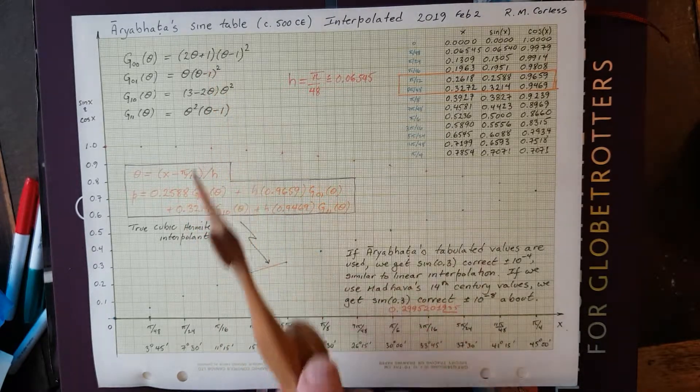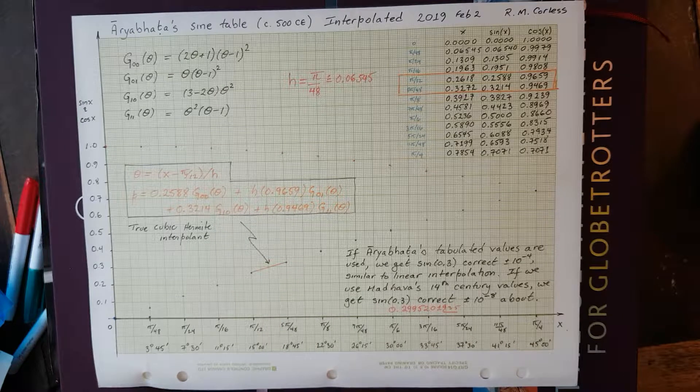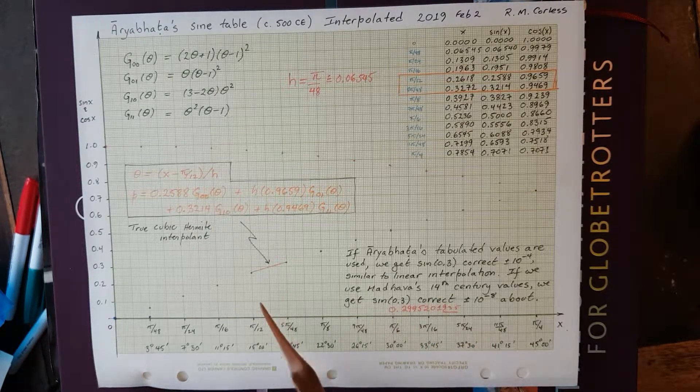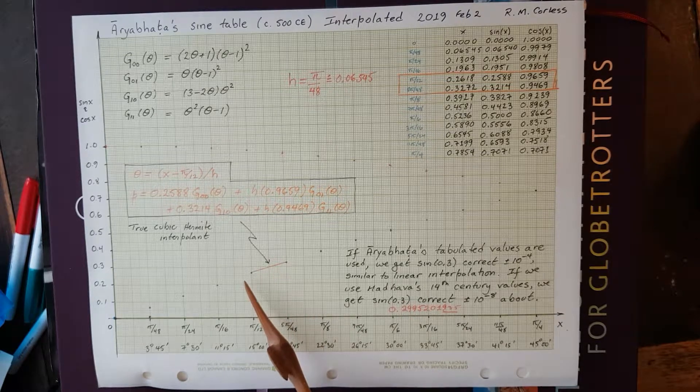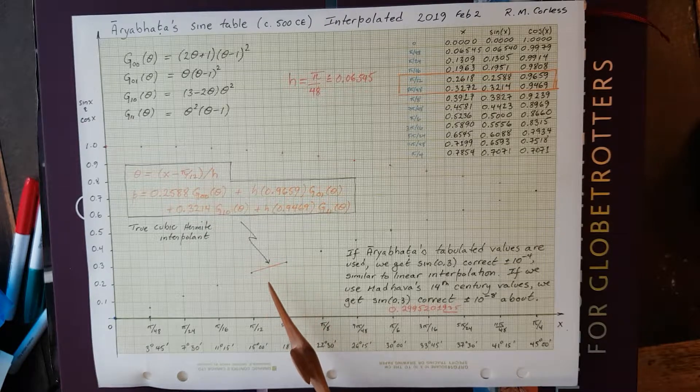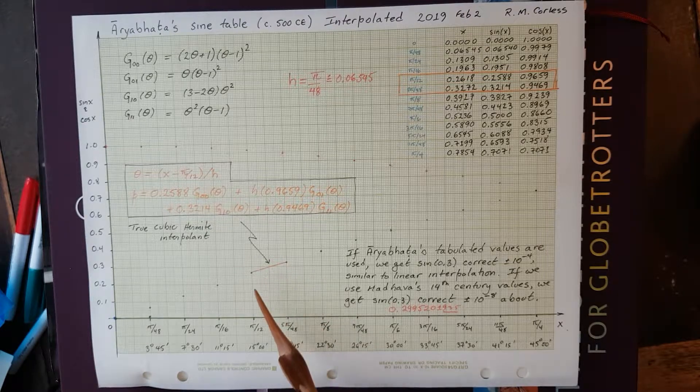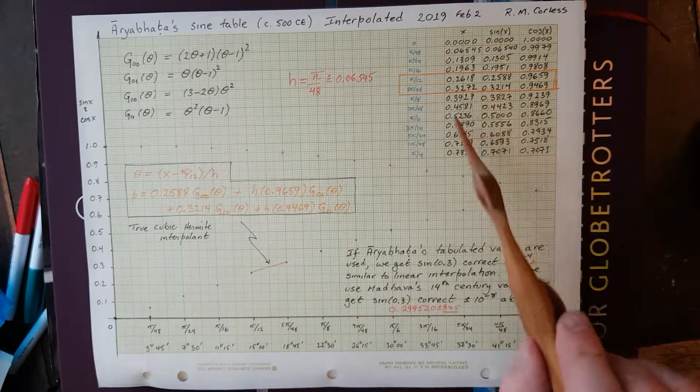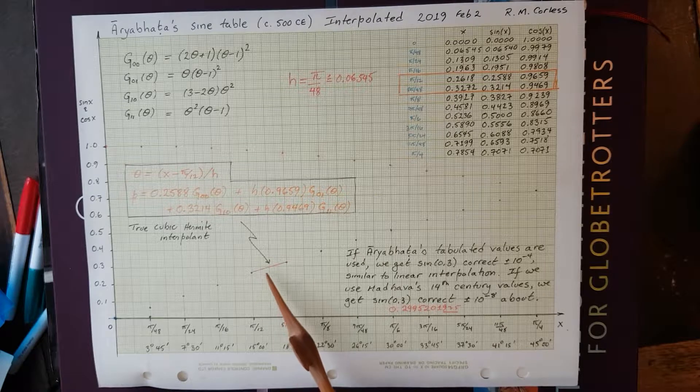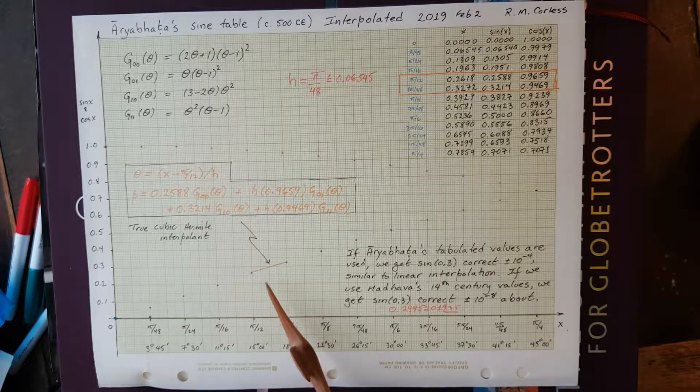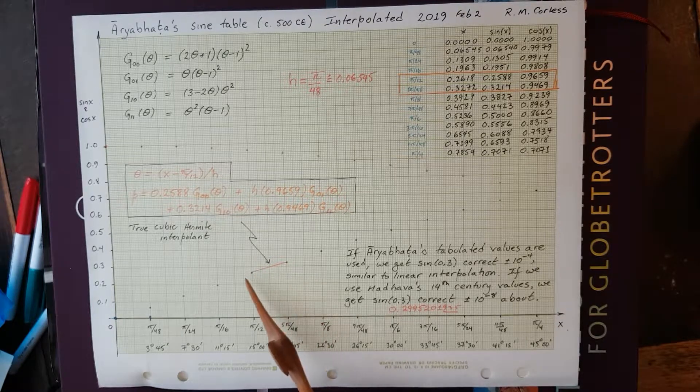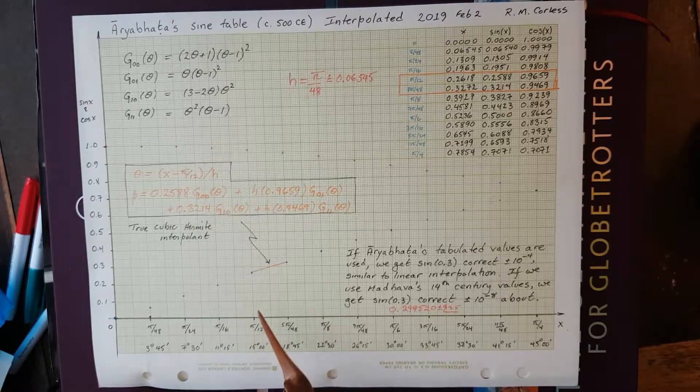using exactly these functions and working to eight decimal digits, we actually get the correct value of sine of 0.3 to 10 to the minus 8. So, the cubic Hermite interpolation can take accurate values in this particular case, and the error that we get is about 10 to the minus 8. Now, if we improve the accuracy to 10 to the minus 12 on the theta data, Hermite interpolation will never get better than about 10 to the minus 8 on here. It's just the cubic polynomial is not the sine function between those two things, but it's pretty good.